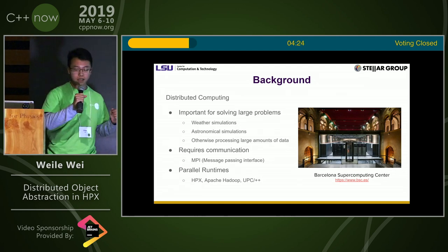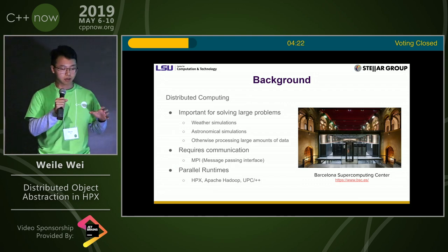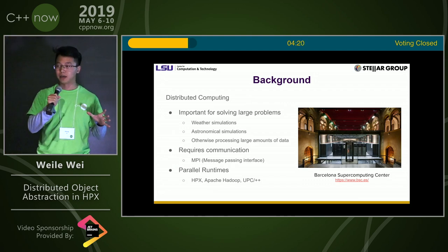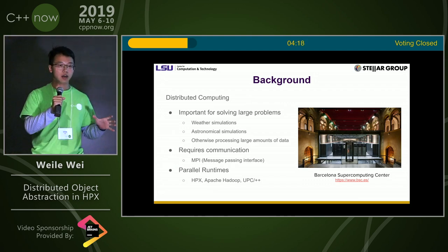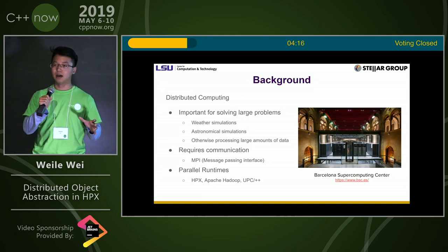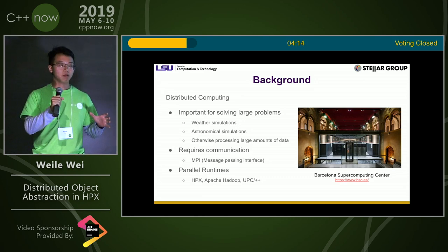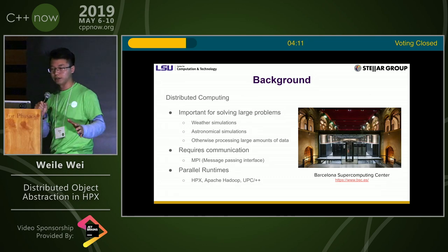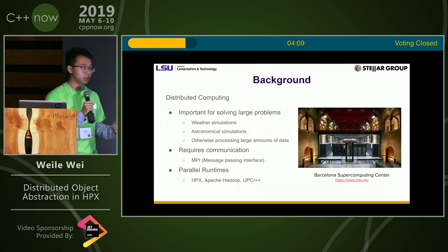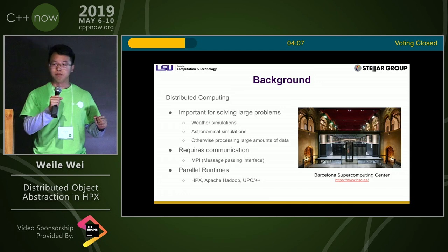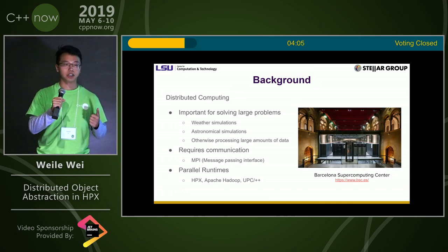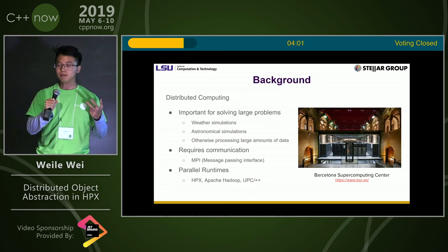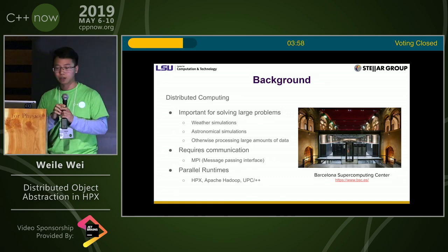We have a large amount of data that cannot be stored in one single machine, so we want to distribute this data across multiple machines, or localities, or nodes. For example, in the weather simulation scenario, one data point may have location information, time information, and also other attributes, which makes the data really large.